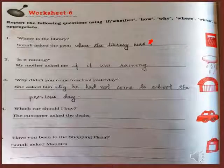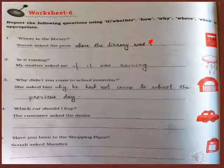Now, dear students, report the following questions using 'if' or 'whether', or 'how', 'why', 'where', 'which' as appropriate. 'Where is the library?' — Sonali asked the piyoon where the library was. 'Is it raining?' — My mother asked me if it was raining. 'Why didn't you come to school yesterday?' — She asked him why he had not come to school the previous day. In the same way, dear students, try to finish the remaining ones.